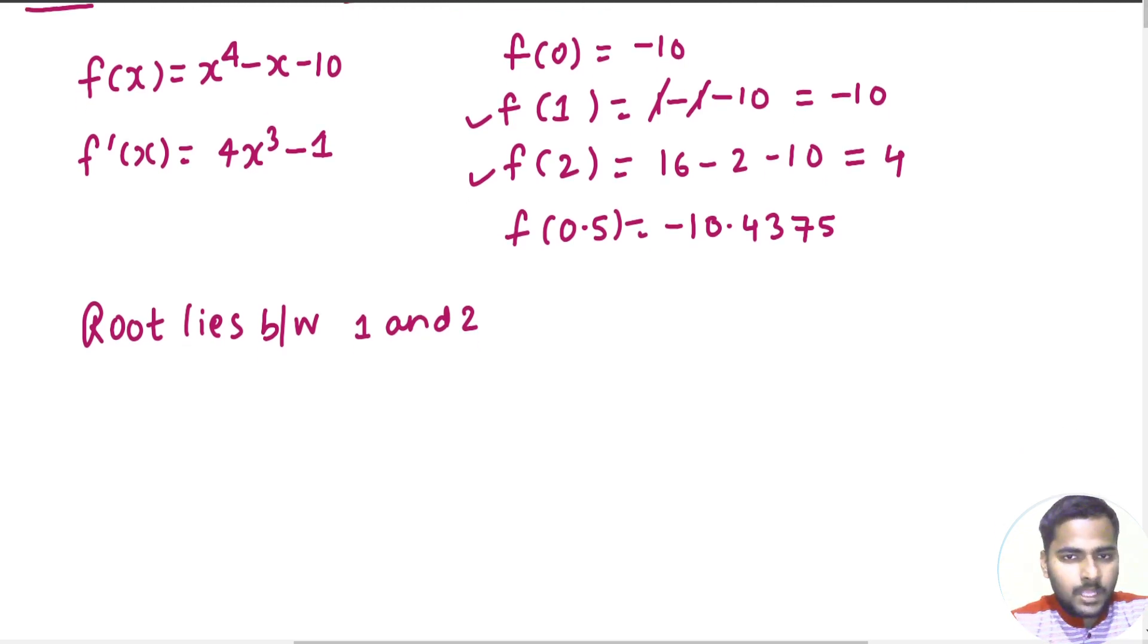Now, what's next? Which value is closer to 0 out of 1 and 2? As you can see, at 1, the value is minus 10, at 2, the value is 4, so 4 is closer to 0. That means take this 2 as x0. You can take any value between 1 and 2 as x0, but I am choosing the value which is closer, the value of the function which is closer to 0.